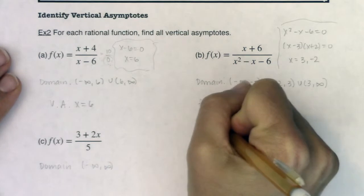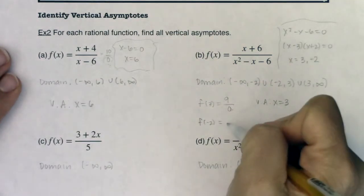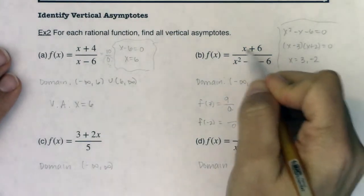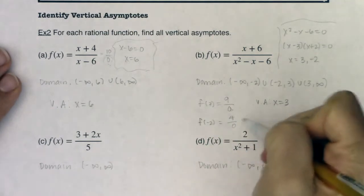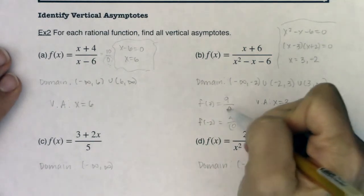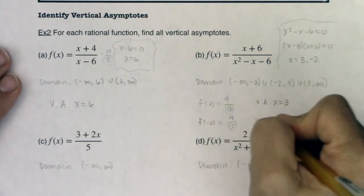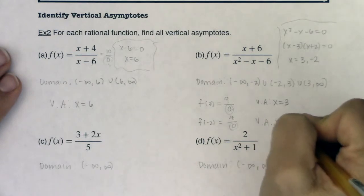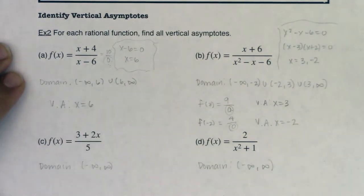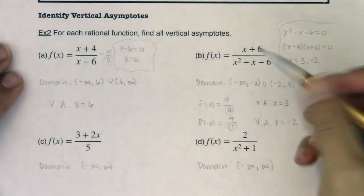Let's try it for f of negative two. If I plug in negative two, I know I get a zero on my denominator, and I get a four on my numerator, so again, only my denominator is zeroing out, so I have another vertical asymptote at x equaling negative two, and you can start to be more efficient with this.